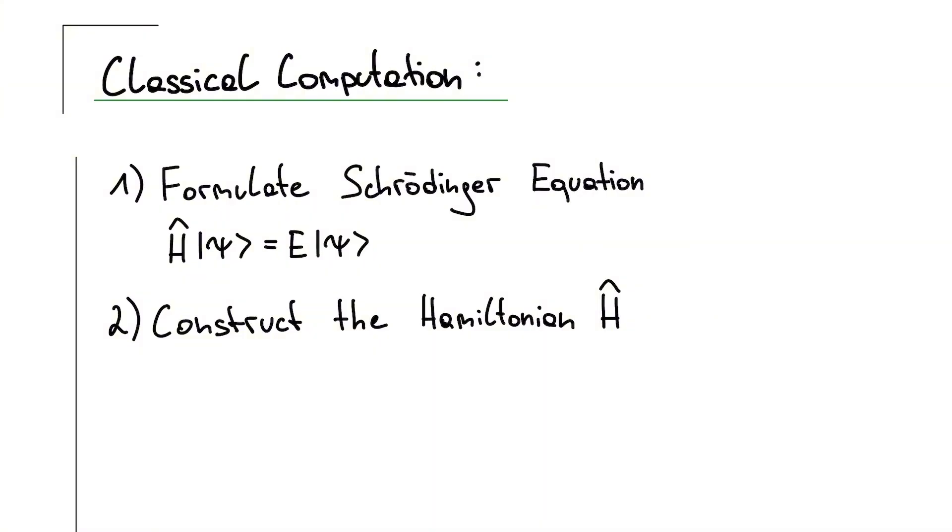Once we have a complete Hamiltonian, then we have a complete description of the system. And with that, we've also fully defined the problem. That already takes us a long way. The rest is then just mathematics. But calling it just mathematics is an understatement, because the really difficult step is still to come.